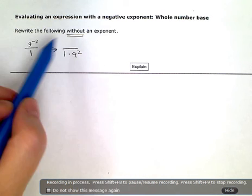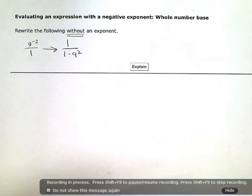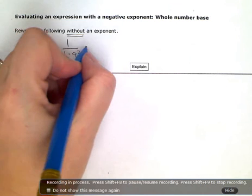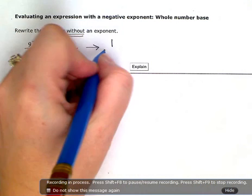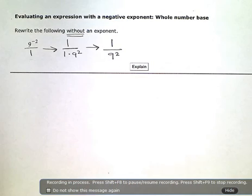Now, up here I have nothing left, so I'm going to just put a 1 up there. And down here, the one that was here, 1 times 9 squared, well, that doesn't really affect anything. It's still just 9 squared.